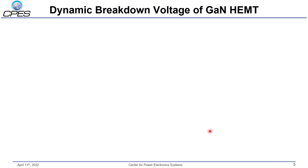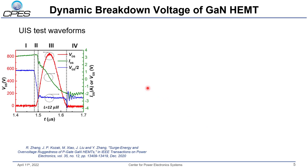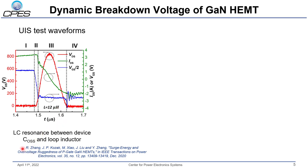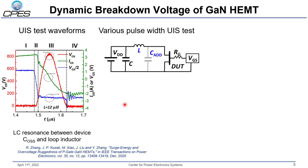In this slide I will show some of our previous work. Here shows the typical UIS test waveform for GaN HEMTs. Phase 3 is the LC resonance between the device output capacitance and loop inductor. If we continue to increase the energy stored in the inductor, we will have higher and higher peak voltage, and eventually the device will fail catastrophically. We have some recent publications in IEEE. From this single event UIS test, we found that the transient breakdown voltage determined the failure.